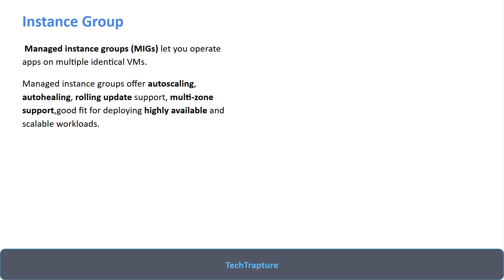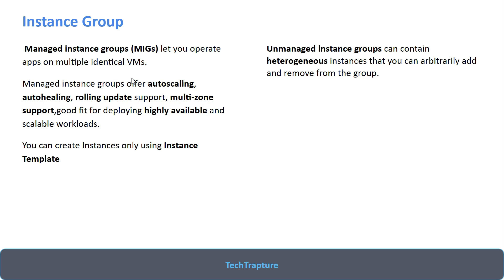Rolling update means if you have to release a new feature, there's no need for any downtime — you can release the newer version of your application without downtime. You can use a regional instance group, which means having instances in multiple zones, making it a good fit for highly available workloads. For managed instance groups, we need identical VMs, so we use an instance template — we define all the configuration in the template, and that template is used to create virtual machines in the instance group.